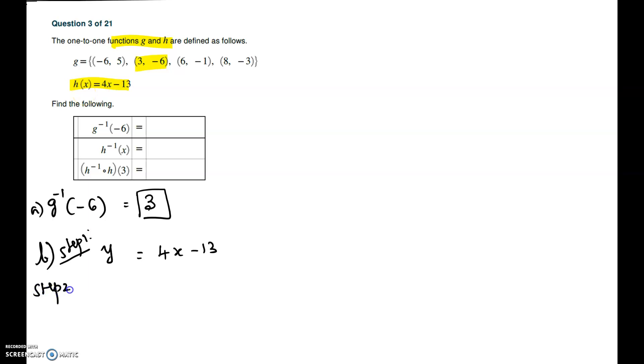Then in step 2, you will switch x and y. Interchange the roles of x and y, meaning write y as x and x as y. Next, we are going to solve for y. Step 3 is to solve for y.